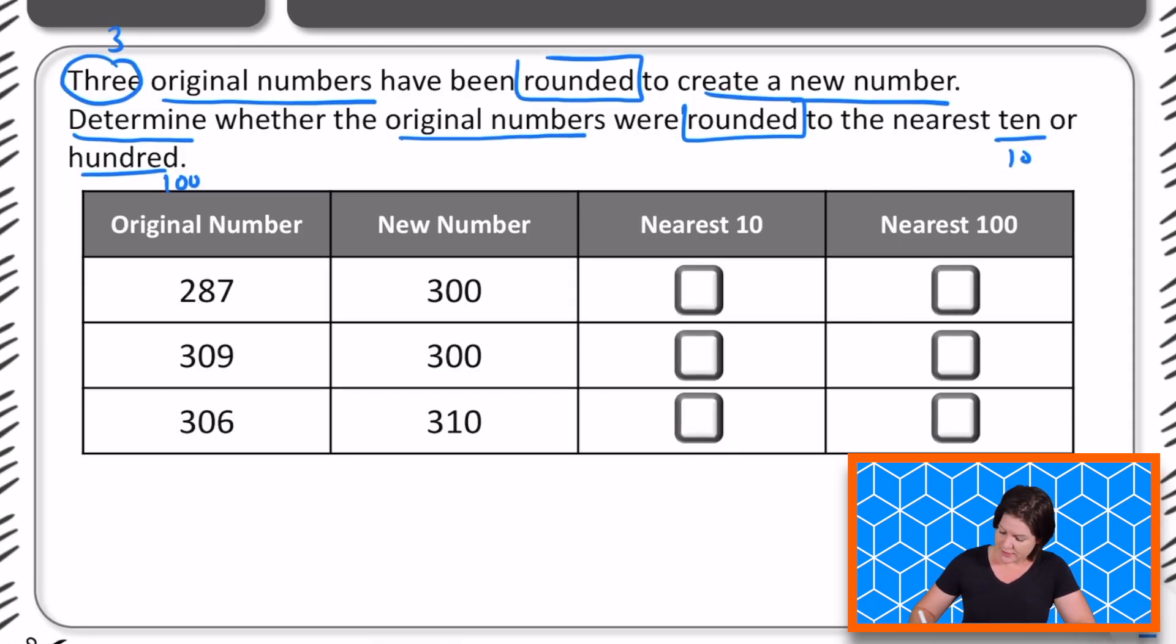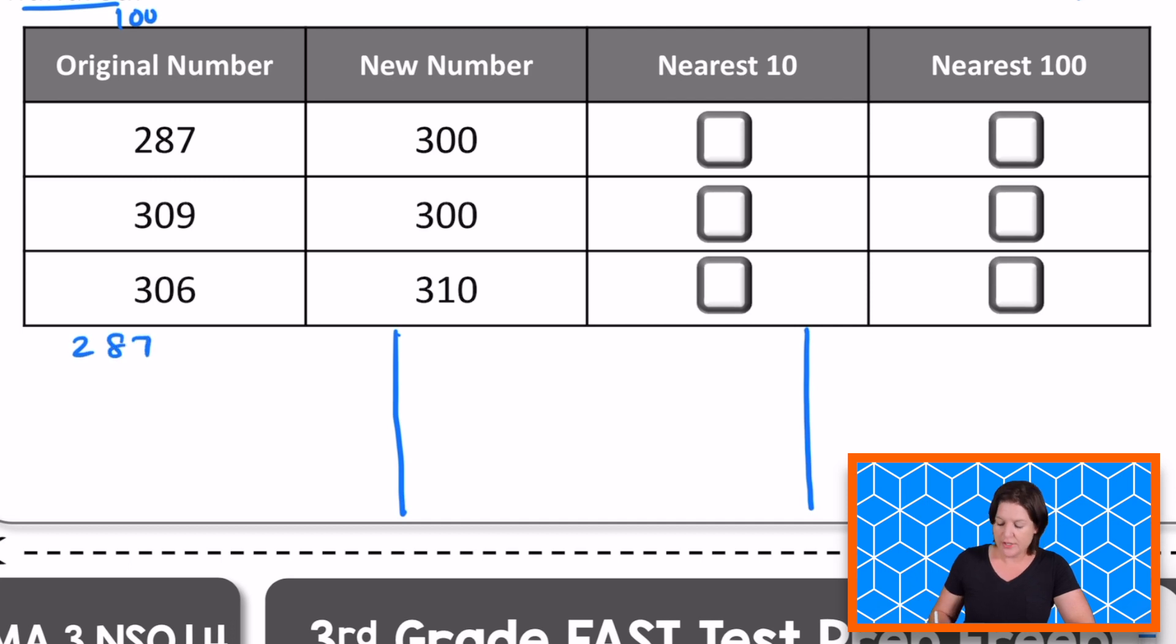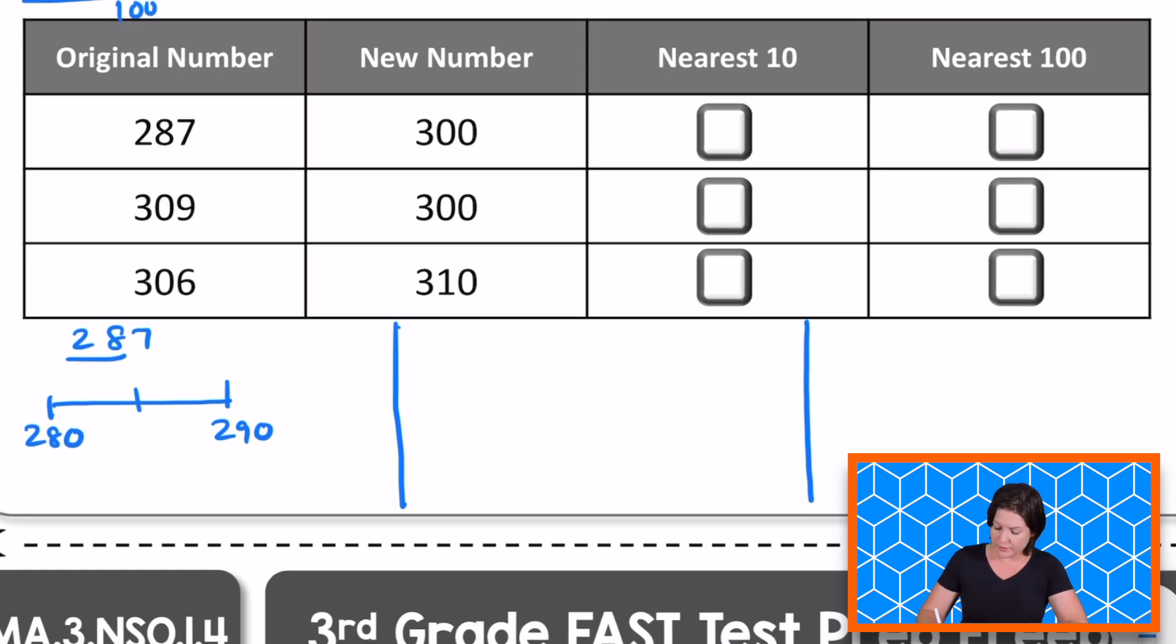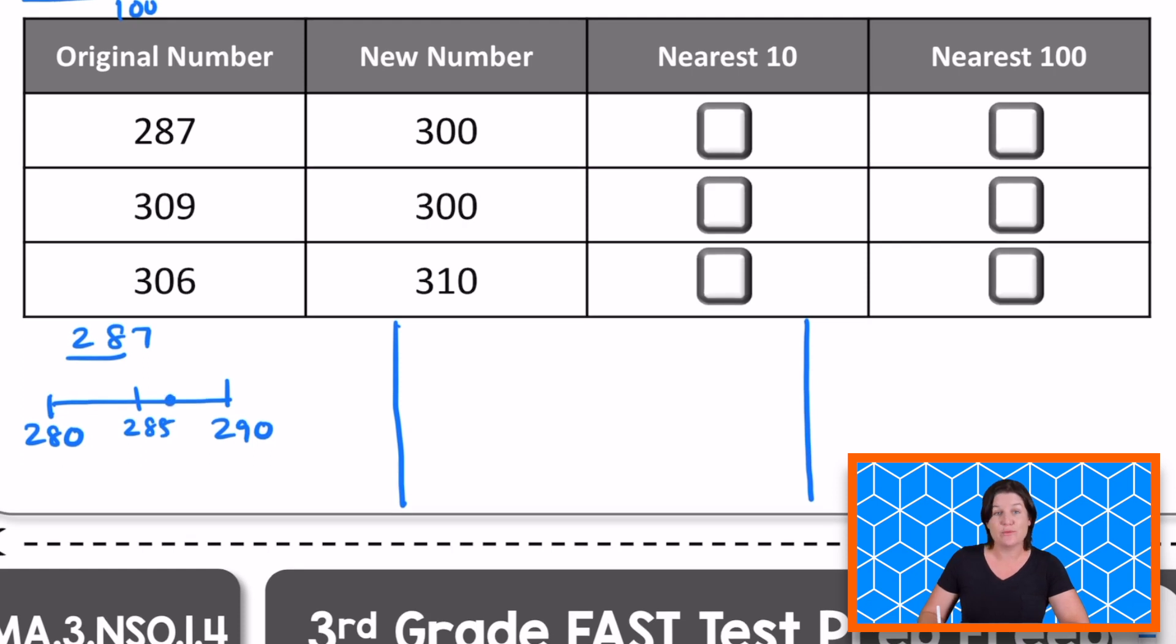Okay, so I'm going to create some space for me to work this out using a number line. We have 287. First, we're going to round this to the nearest 10. Let's see if that's what we get. We have 28 tens. So I'm creating my number line. I know it'll be 28 tens on the left side and 29 tens on the right side or 280 and 290. The halfway point is really important. 285 is that halfway point because 287 is right here past the halfway point. It would be rounded up to 290 when rounded to the nearest 10.